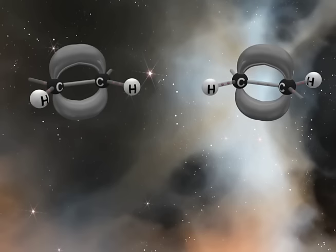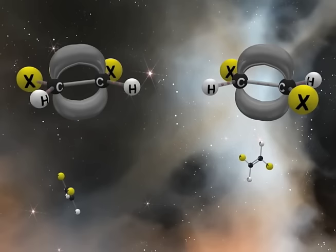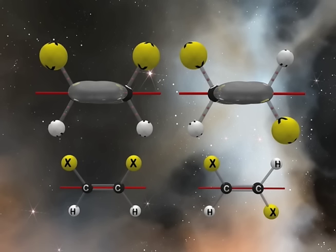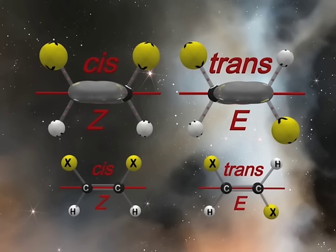Understanding the pi bond helps us realize why geometric isomers are isolable. Geometric isomers have the same gross connectivity but differ only in how the groups are oriented in space due to hindered rotation about the doubly bonded carbons. When we draw an imaginary line along the axis of the double bond and compare groups on each carbon using the Cahn-Ingold-Prelog sequence rules, we can determine if the groups of priority are on the same side, called the cis isomer, often abbreviated Z, or on opposite sides, called the trans isomer, often abbreviated E.